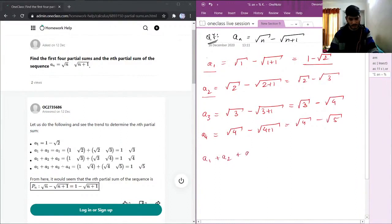Now we need to find the sum of this. This will become 1 minus square root of 2 plus square root of 2 minus square root of 3 plus square root of 3 minus square root of 4 plus square root of 4 minus square root of 5.